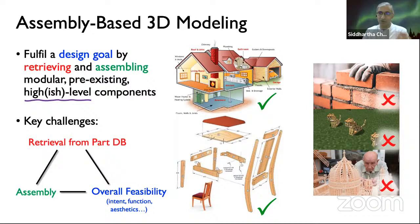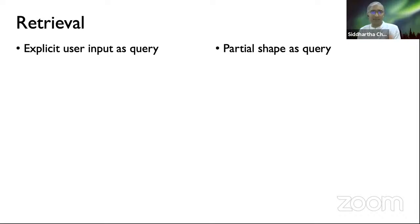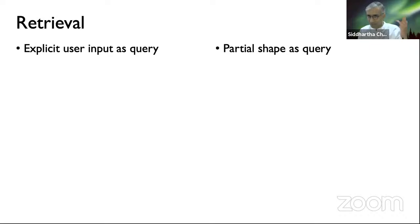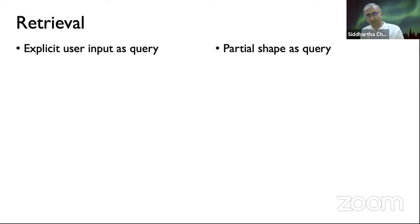Let's start with the retrieval challenge. I think of retrieval in assembly-based modeling as being of two fundamental types: one where you look for a part with explicit user input — you say 'I want my part to sort of look like this' — and the system retrieves parts from the database. The other type is retrieval where only the partial shape you're constructing serves as the query, so the system needs to be smart enough to look at what you're building and retrieve components that can suitably augment it. Let's look at examples of both approaches.